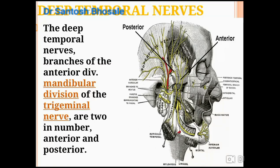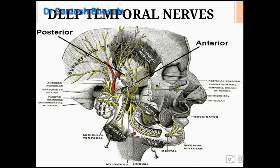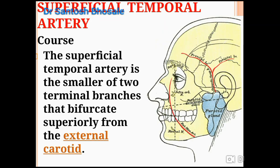The deep temporal nerves are a pair coming from the anterior division of the mandibular nerve. The mandibular nerve is the nerve of the first arch, and the masticatory muscles are also derived from the first arch. That is why the temporalis is supplied by the mandibular nerve, or more specifically, a branch of the mandibular nerve.